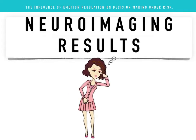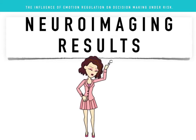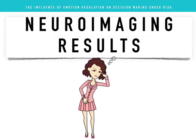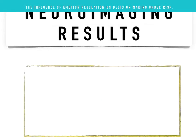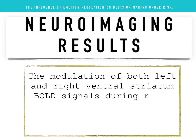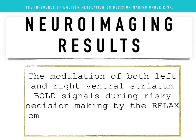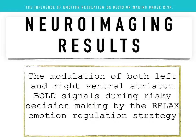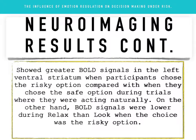Neuroimaging analysis focused on the decision phase and sought to identify brain regions recruited during decision-making that were triggered by emotion regulation. The modulation of both the left and right ventral striatum BOLD signals during risky decision-making by the relaxed emotion regulation strategy showed greater BOLD signals in the left ventral striatum when participants chose the risky option compared with the safe option during trials where they were acting naturally. On the other hand, BOLD signals were lower during relaxed than look when the choice was the risky option.